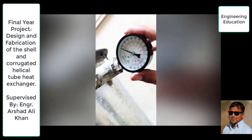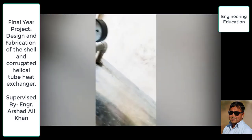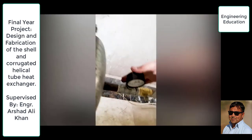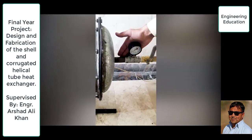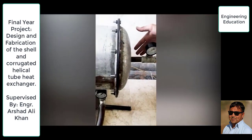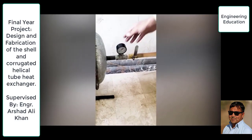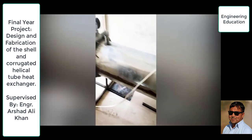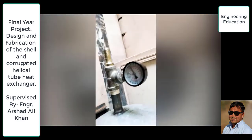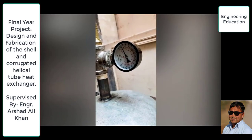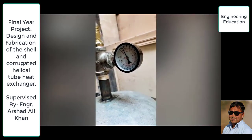Here are the pressure gauges: this is the inlet pressure gauge of the shell side, and here is the inlet pressure gauge of the tube side, through which water flows from the corrugated tubes and the pressure readings are shown. On the other side there is the same pressure gauge with the same range, and the pressure drop across the tubes will be obtained by calculating the difference between these two pressure gauge readings.